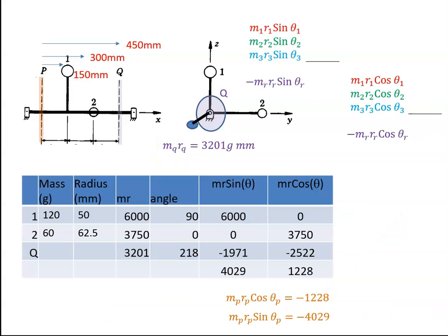For static balance we just need M and R. So I have M1 which is 120 grams, M2 60 grams. R1, so this distance here was 50 millimeters, this distance here was 62.5. We were given that in the question, so I can work out what MR is for both of those. And then for Q, this plane here, we just worked out that MQ RQ was 3201.